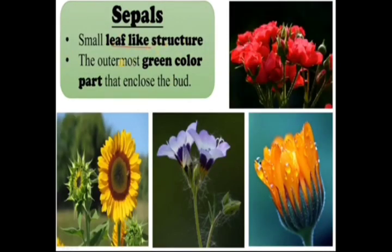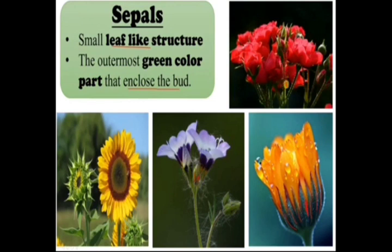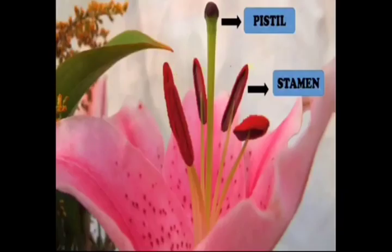Sepals are the small leaf-like structures — the green colored part that encloses the bud. Look at here, this is the sepal. The green colored part which encloses the bud, which encloses a flower, that is the sepal. This is a sepal, and it covers the flower.